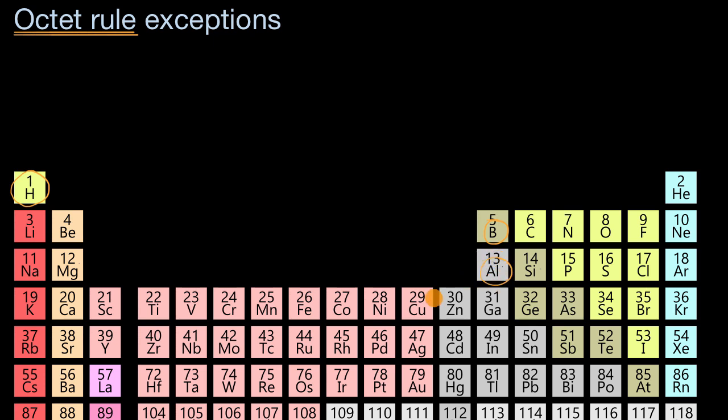Boron and aluminum, for example, can form stable molecules where the boron or aluminum only have six valence electrons, not eight. And there are exceptions in the other direction. As you get to the third period and beyond, we'll actually see atoms that can maintain more than eight valence electrons.